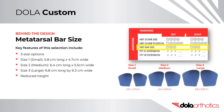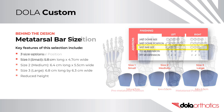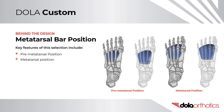Behind the Design – Metatarsal Bar Size. Metatarsal bars are available in three different sizes in the Dollar Prescription Form, at a reduced height for increased clinical applications. Behind the Design – Metatarsal Bar Position. Options include a pre-metatarsal position, where the anterior border sits behind the metatarsal heads influencing the metatarsal shafts, or the metatarsal position, where the bulk of the pad is directly under the metatarsal heads.